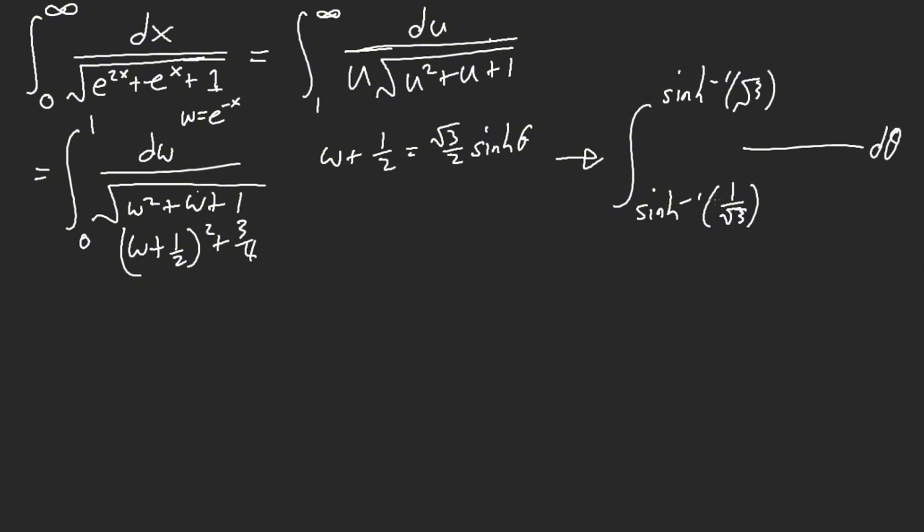D theta, and then cosh theta root three over two, but then we have root three over two here that's going to be cosh so they all cancel out. So your answer is technically inverse cinch of root three minus inverse cinch of one over root three. If you got this, congratulations, this is the correct answer.